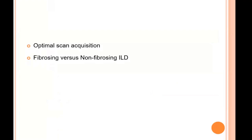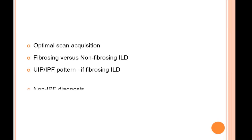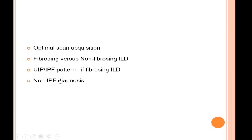We have to differentiate whether it is a fibrosing interstitial lung disease or a non-fibrosing one. In fibrosing interstitial lung diseases we have to first identify and rule out the UIP pattern — it must be excluded first. If the UIP or IPF pattern is completely excluded, then we go for the non-IPF diagnosis and identify the particular pattern.